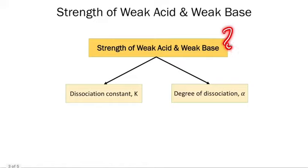How can we determine the strength of weak acid and weak base? There are two ways: the first one is using dissociation constant K, and the second one is using what we call the degree of dissociation alpha.